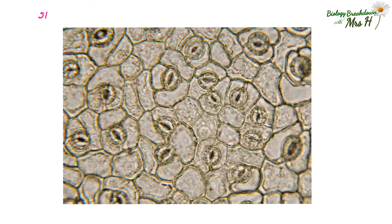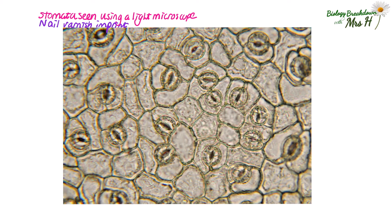This is what stomata look like if you're using a light microscope. You can do this really easily at school by putting a small patch of colorless nail varnish on the underside of a leaf, letting it dry and then peeling it off using sellotape. Stick the sellotape to a slide and you have an imprint of the stomata.